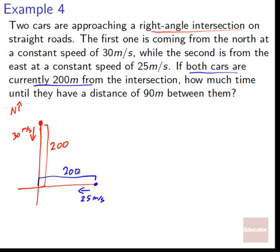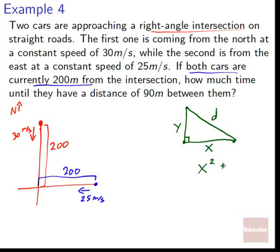We don't have the distance between them directly, but we know how far each is from the intersection. If x = 200 − 30t and y = 200 − 25t, then by the Pythagorean theorem, x² + y² = d². We want d = 90, so 90² = (200 − 30t)² + (200 − 25t)². We now expand and simplify this equation.